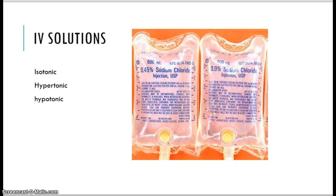Isotonic is the same as what's in the body, and we think of normal saline. 0.9% sodium chloride is isotonic, as is lactated Ringer's. Hypertonic is above, and hypotonic is below. Your hypertonic solutions are typically dextrose, with the exception of D5W, which is isotonic.